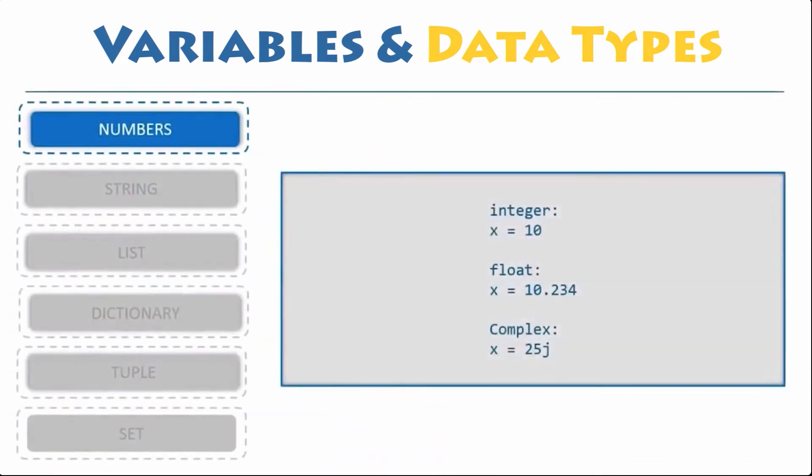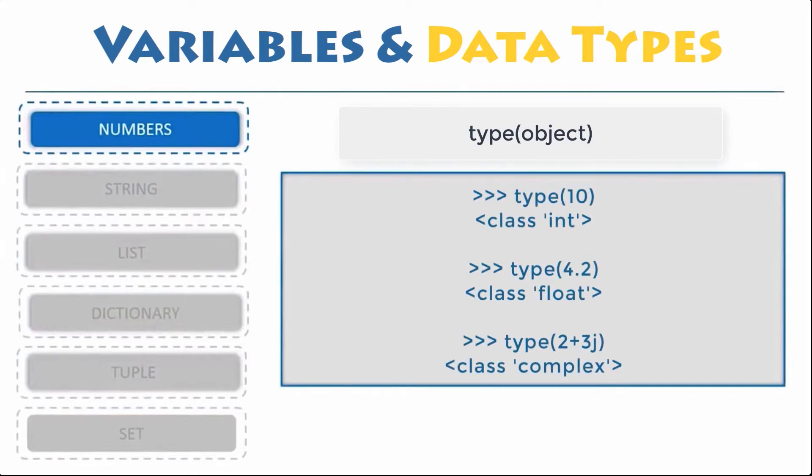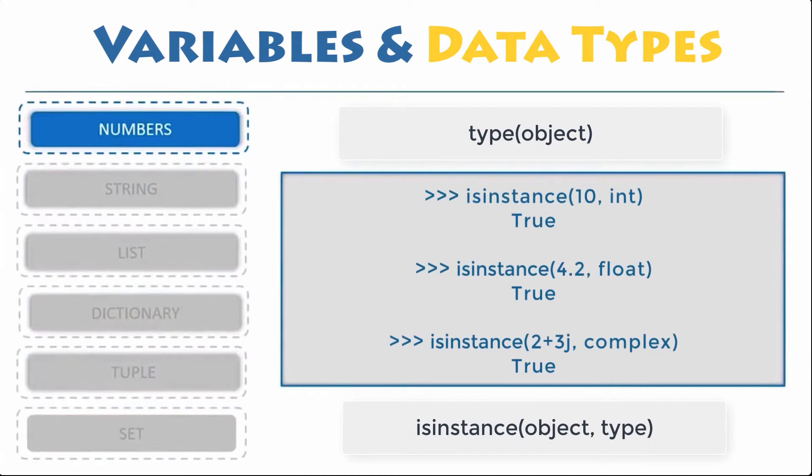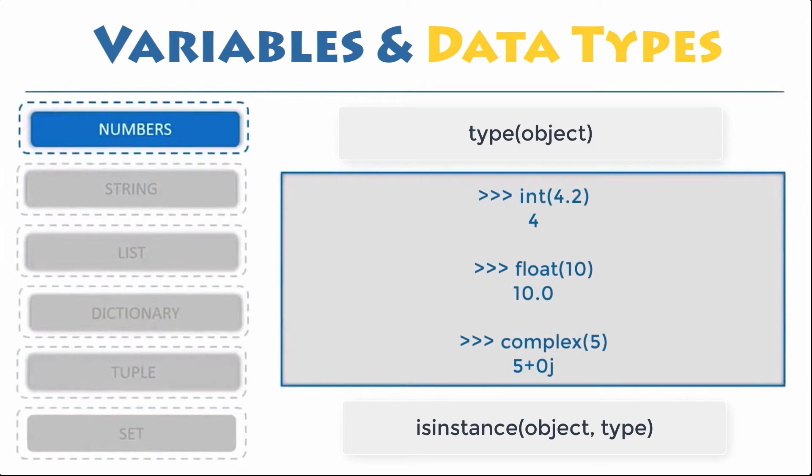Numerical data types. In Python, numeric data type represent the data which has numeric value. Numeric value can be integer or floating numbers, even complex numbers. These values are defined as int, float, and complex class in Python. We can use the type function to know which class a variable or a value belongs to and the isinstance function to check if an object belongs to a particular class. You can convert from one type to another with the int, float, and complex methods.